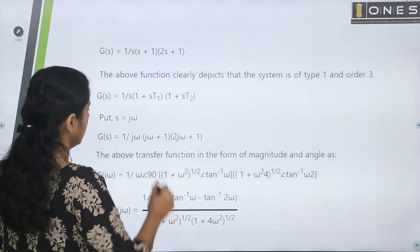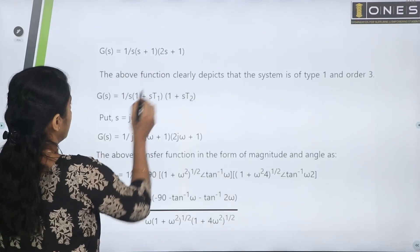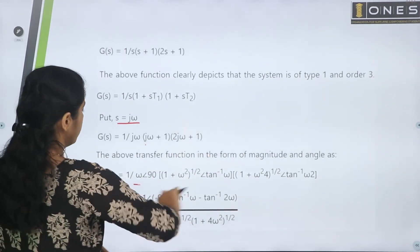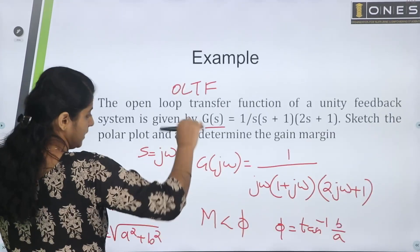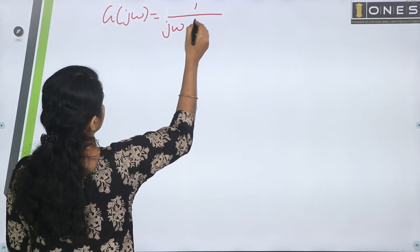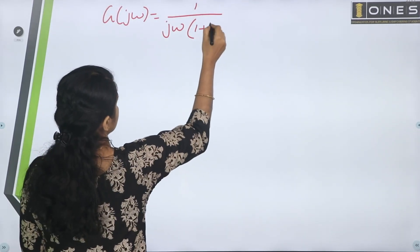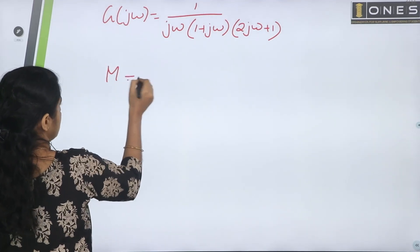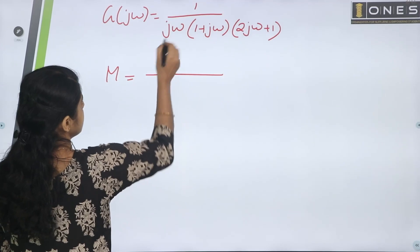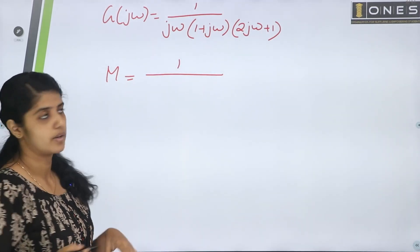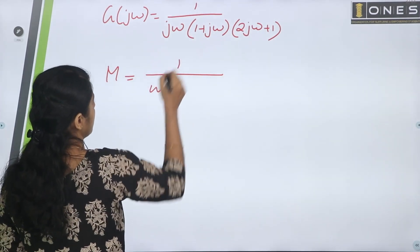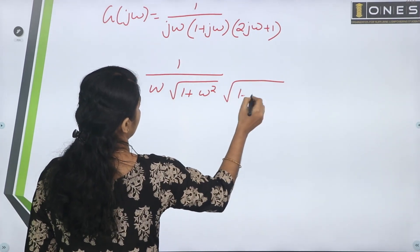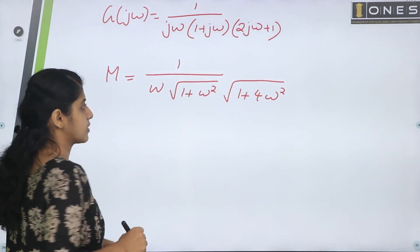Steps: substitute jω into the equation. The magnitude of G(jω) is: the magnitude of jω = √(0² + ω²) = ω; magnitude of (1 + jω) = √(1 + ω²); magnitude of (2jω + 1) = √(1 + 4ω²). So the overall magnitude = 1 divided by [ω · √(1 + ω²) · √(1 + 4ω²)].